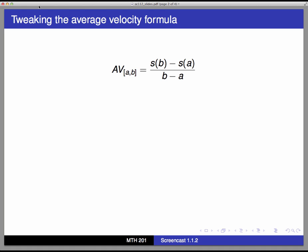What we're going to do now is look at this formula from a different point of view, focusing on the ending time b. In an average velocity problem, we look at the change in position starting at time a and ending at time b. Now, another way to think about the ending time is that it's the starting time, plus a small time change.